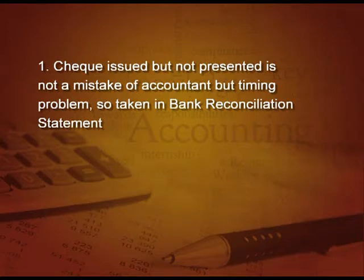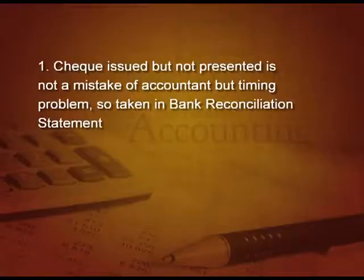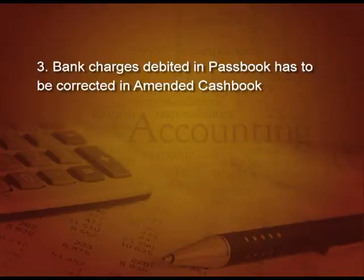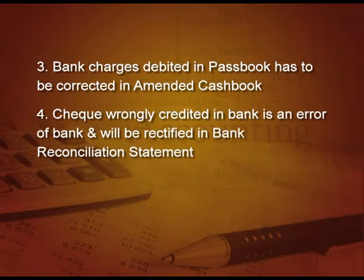Point 1: check issued but not presented is not a mistake of the accountant but is due to a timing problem, so it will go to bank reconciliation. Point 2: check deposited but not credited in the pass book is also a timing problem — it takes some time between depositing a check and its clearance — so this point also goes to bank reconciliation. Point 3: bank charges debited in pass book — this has to be corrected in the amended cash book because it is the mistake of the accountant. Point 4: check wrongly credited in the bank is an error of the bank, so it will be rectified in bank reconciliation.